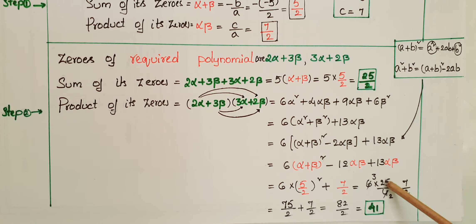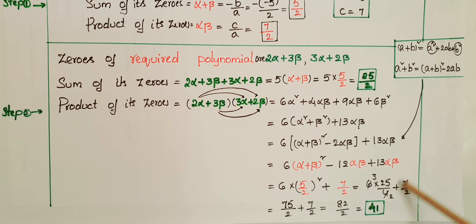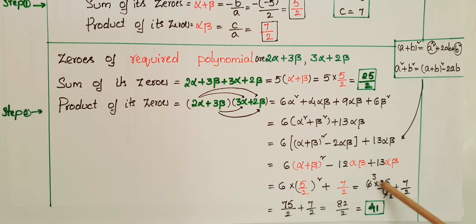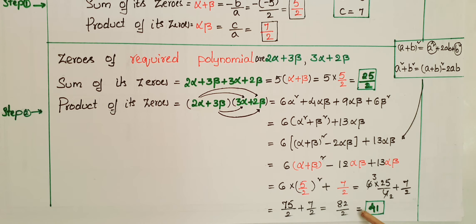This equals 6 × 25/4 + 7/2 = 75/2 + 7/2 = 82/2 = 41. So the product of the zeros of the required polynomial is 41.